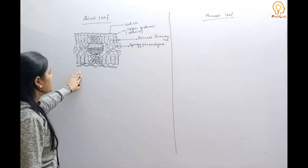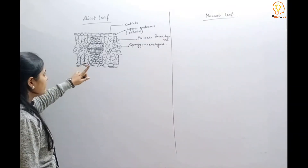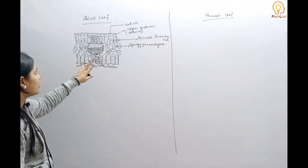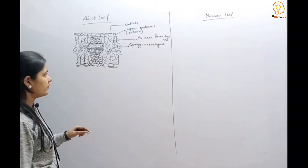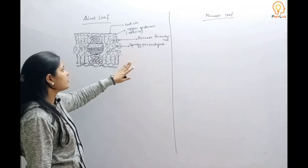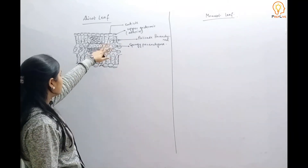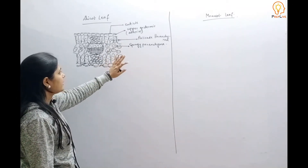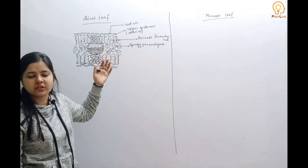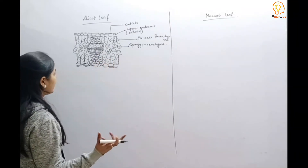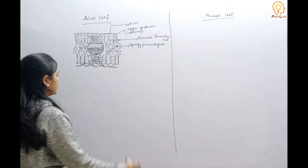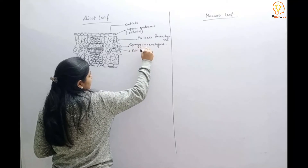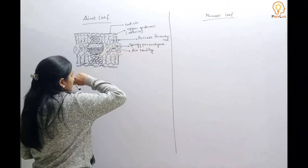Below the palisade parenchyma is the spongy parenchyma, which contains chloroplasts. In the dicot leaf, the mesophyll cells are divided into two parts: palisade parenchyma, which is long and elongated and contains chloroplasts, and spongy parenchyma, which is circular, spherical, or oval in irregular shapes and also contains chloroplasts. There are also air cavities or air spaces present between the spongy parenchyma cells.